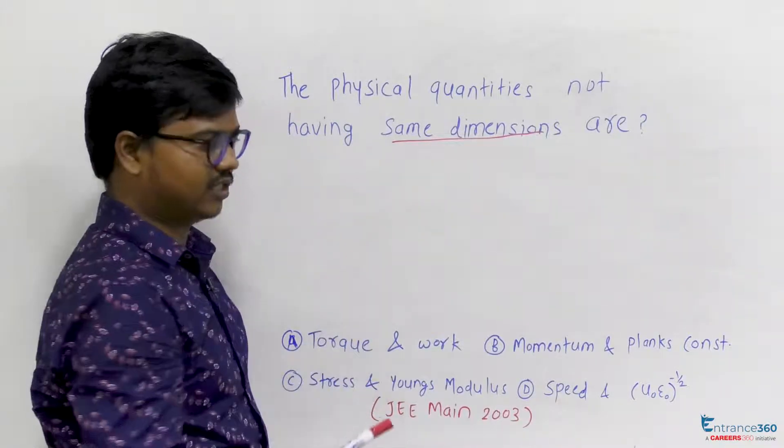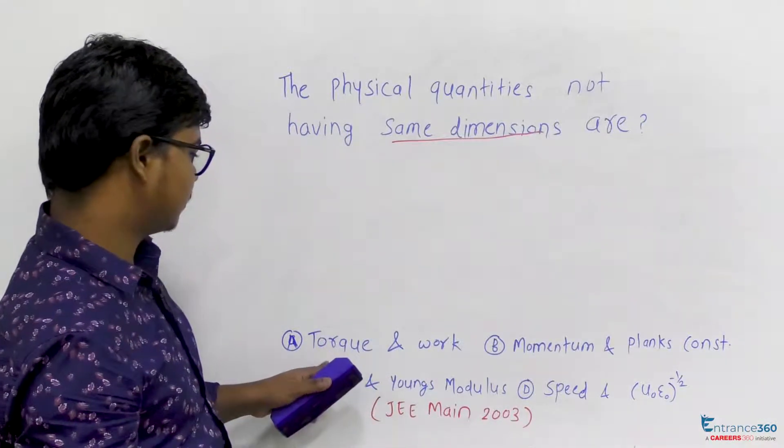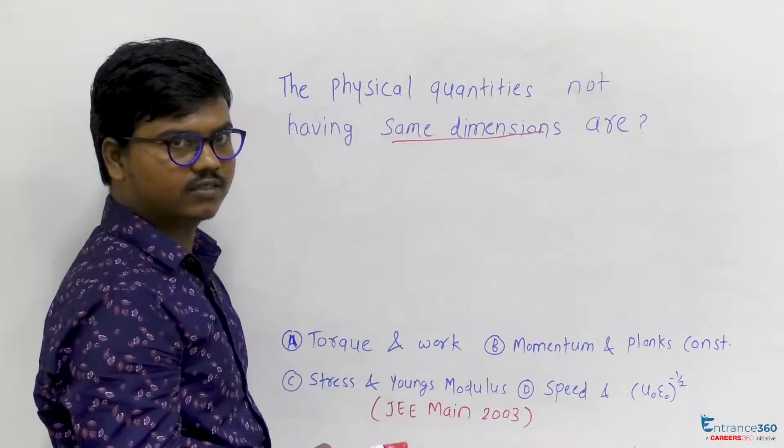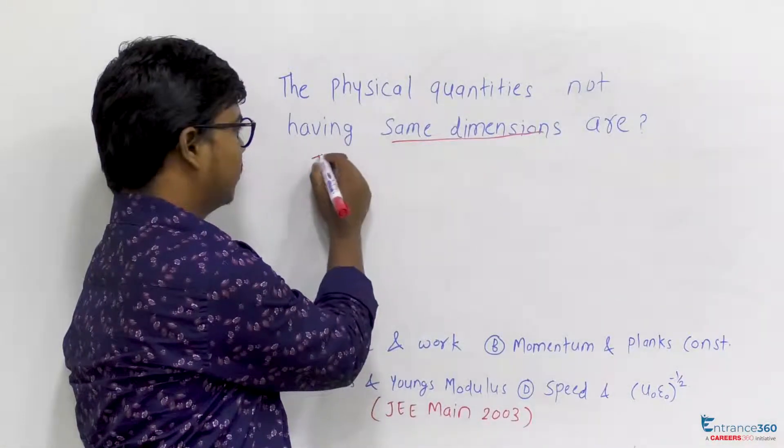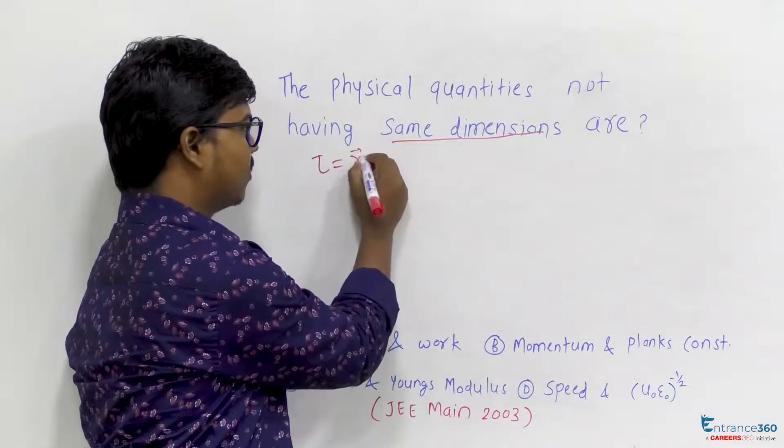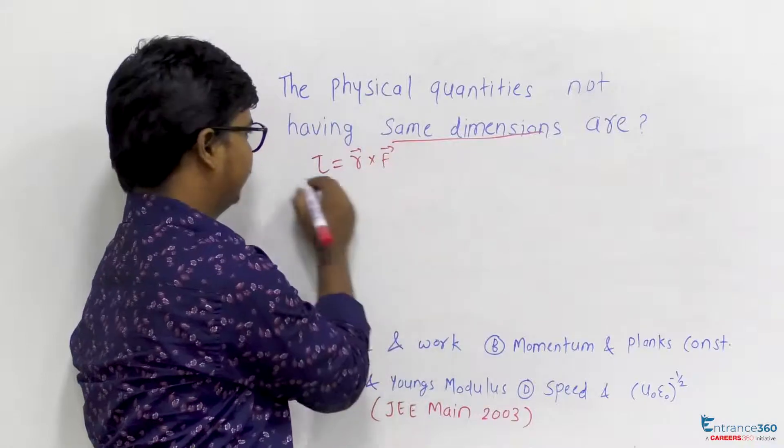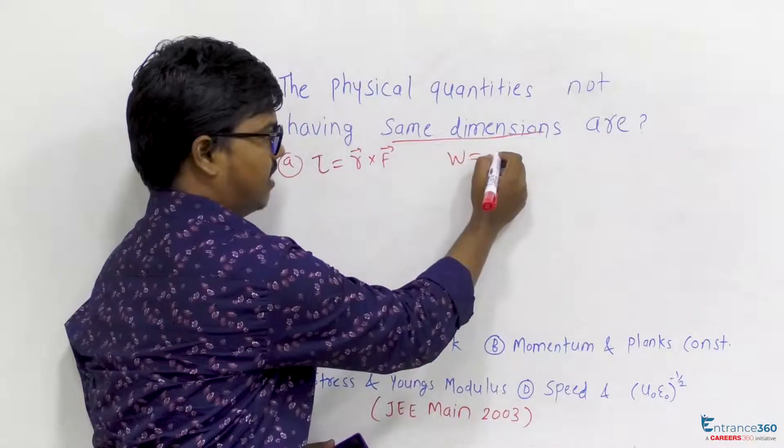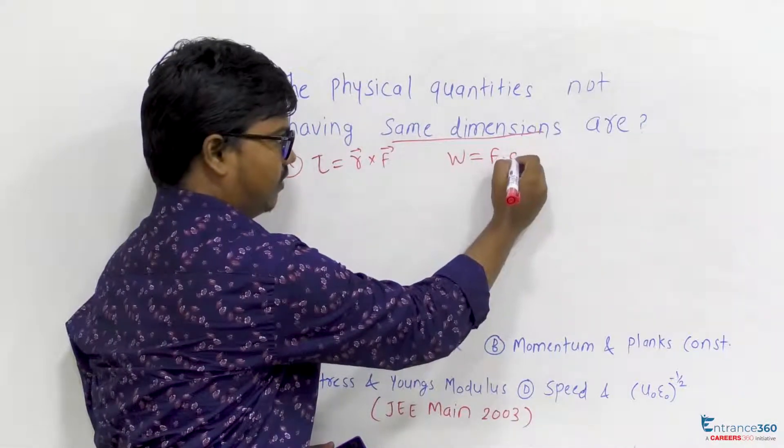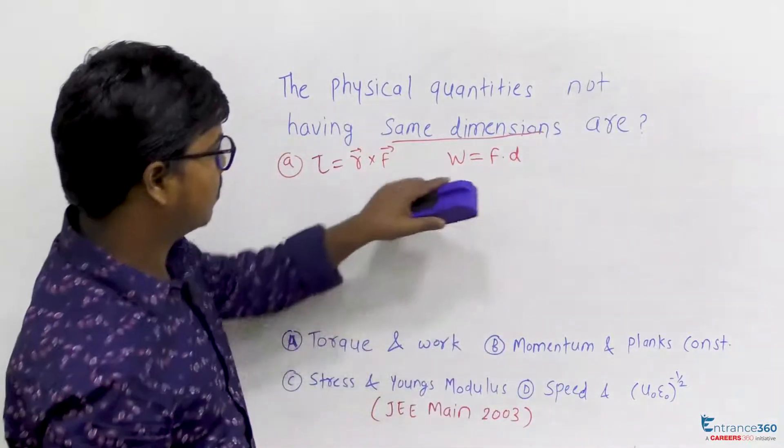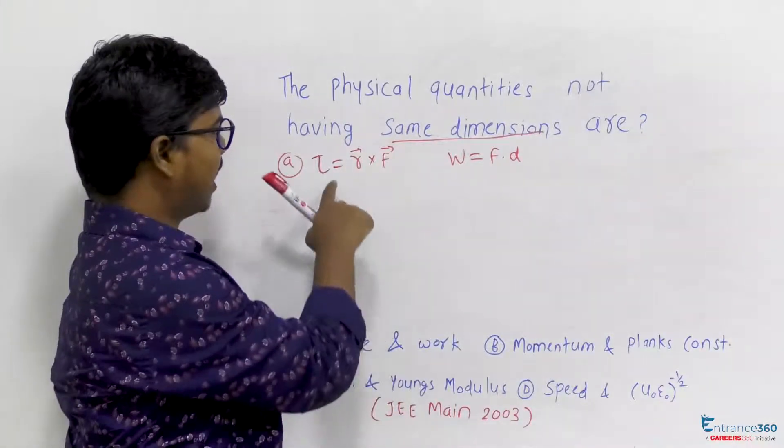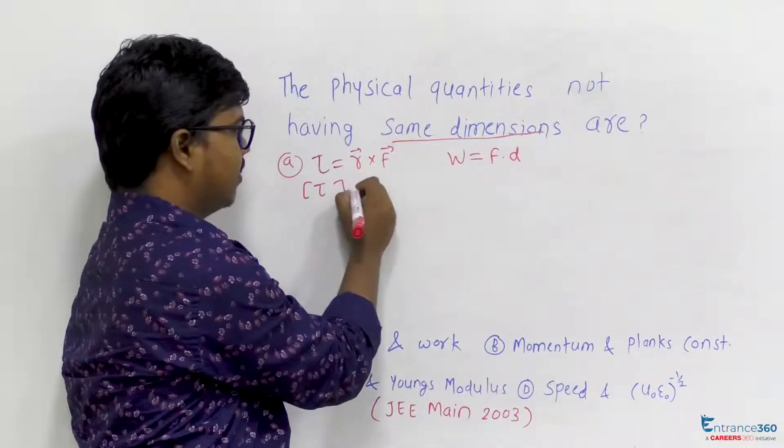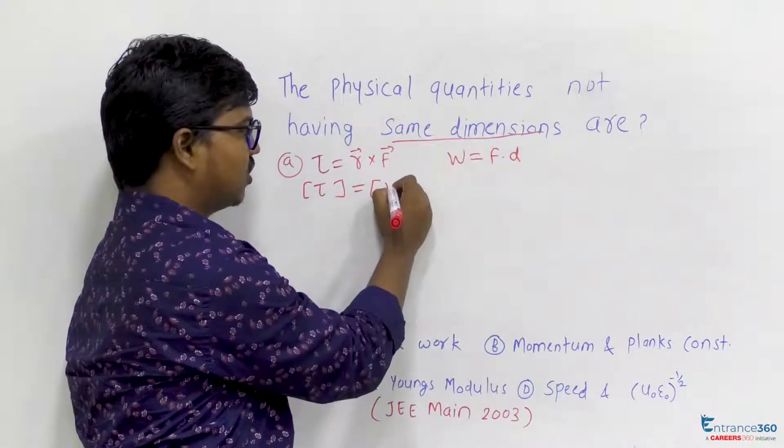Let's start with torque and work. For this we should know their formulas. Torque is given as R cross F, and work is given as force into distance. As we clearly see, the dimension of torque will be equal to dimension of work.